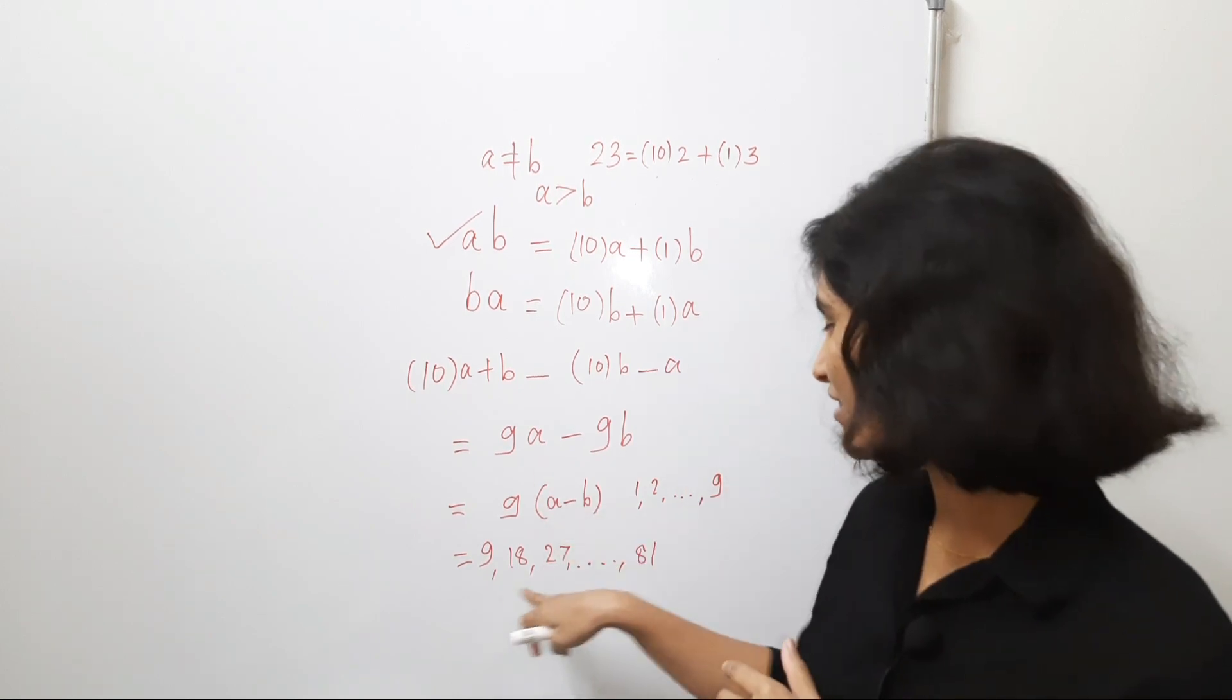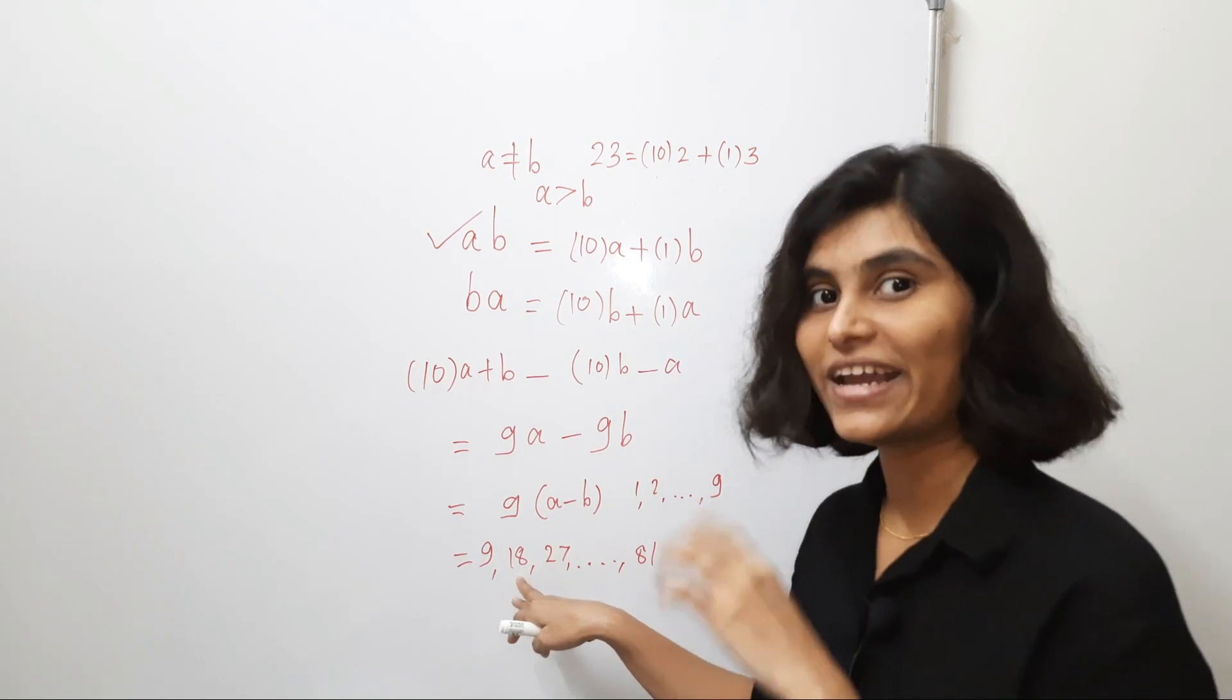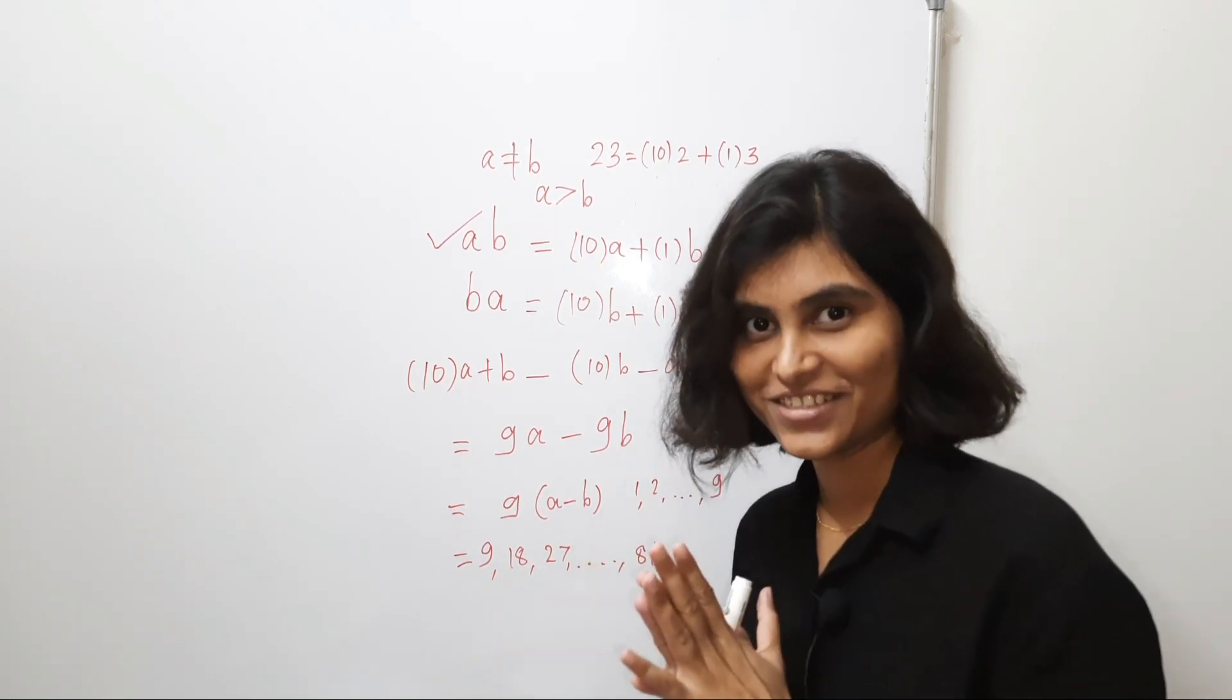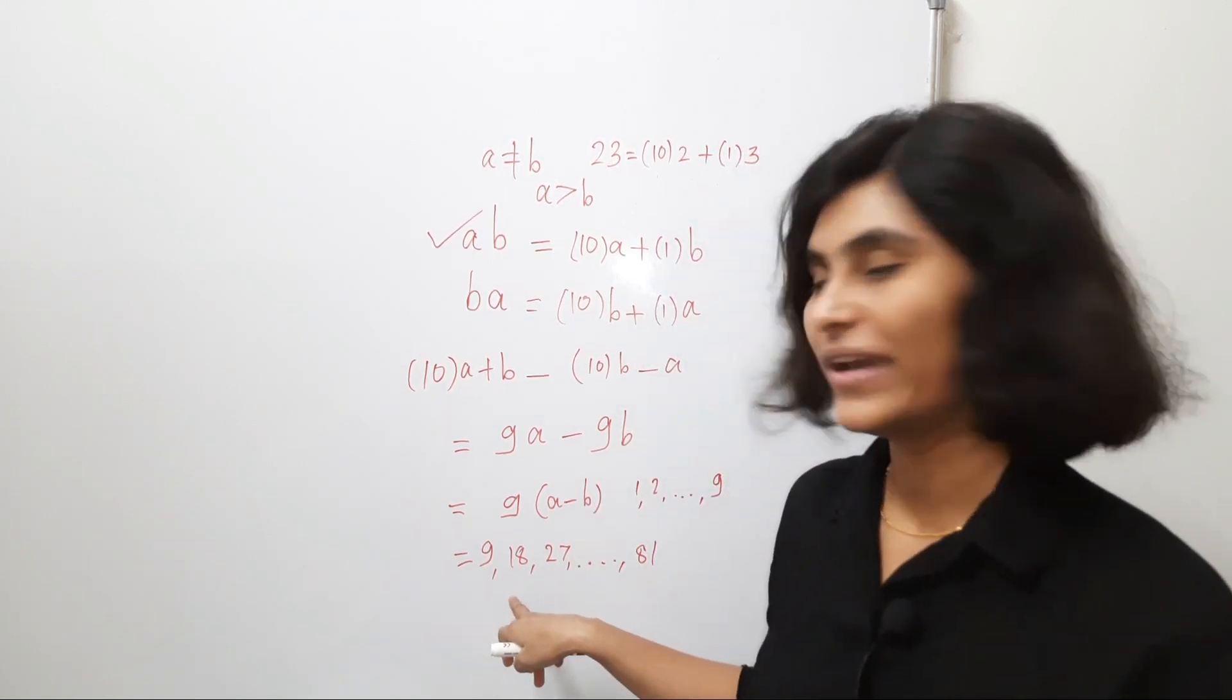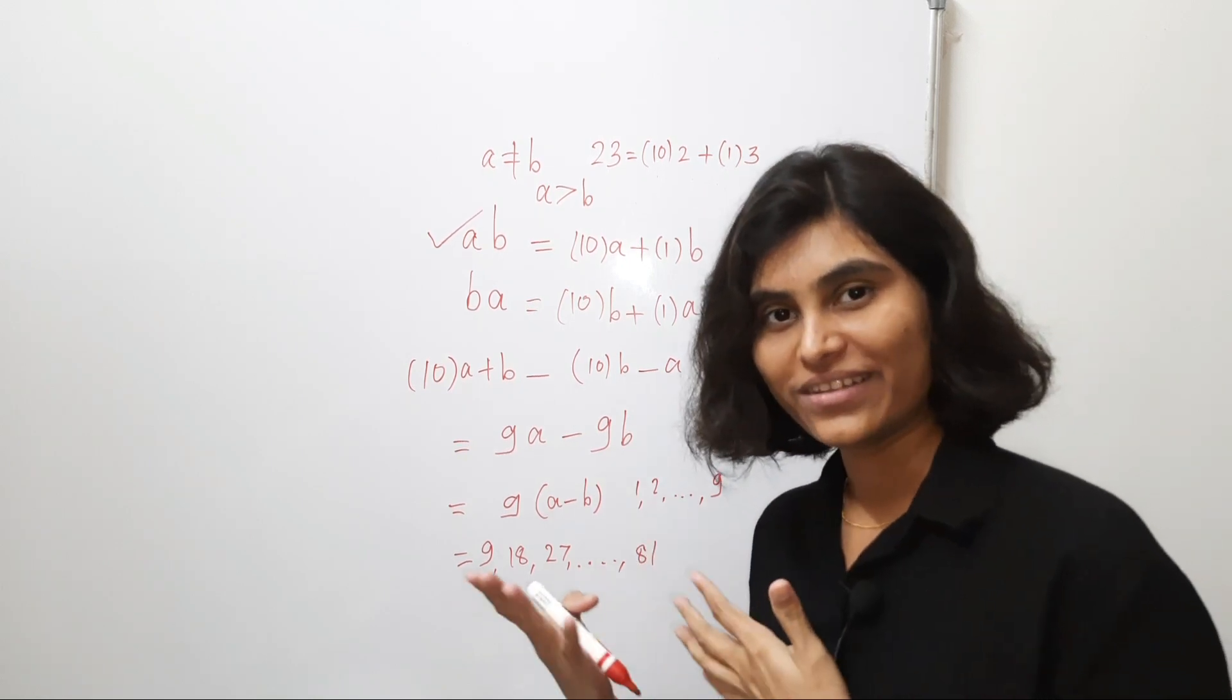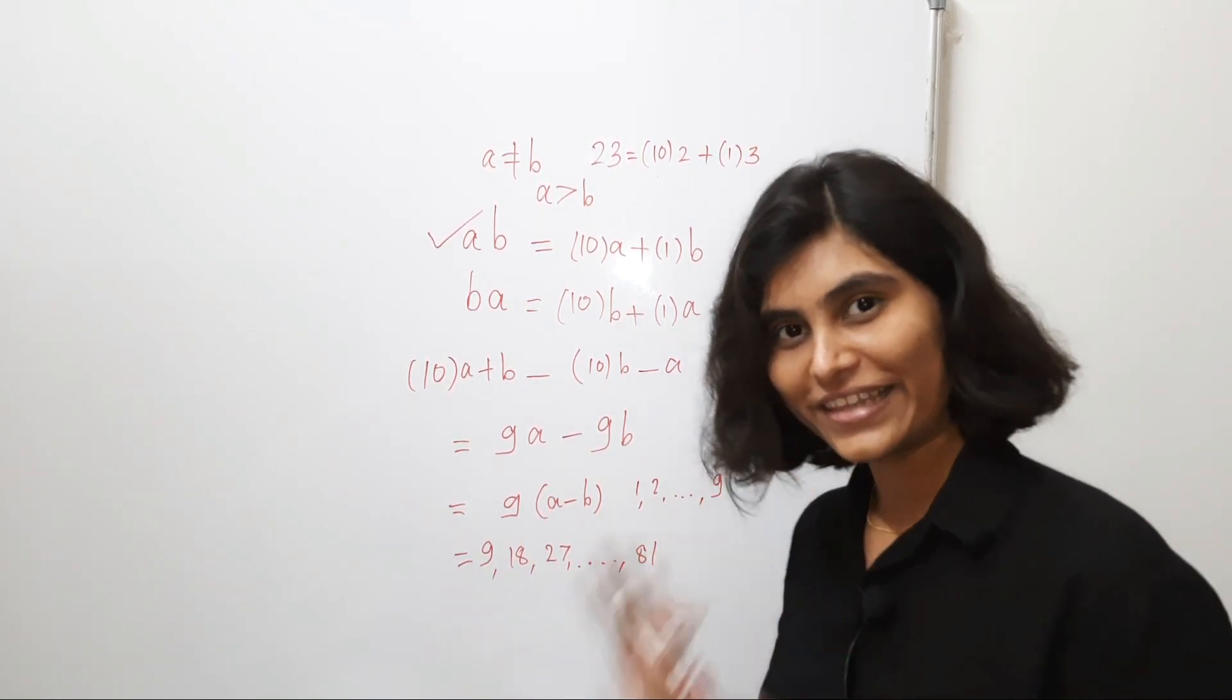Look at these numbers carefully. When you take the addition of the digits in that number, then it is clearly 9. For example, you can take the number 18. So, 1 plus 8 is 9, 27, 2 plus 7 is 9 and so on. 81, 8 plus 1 is again 9.